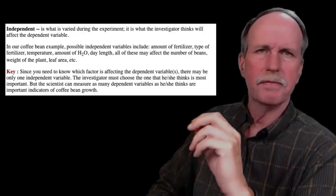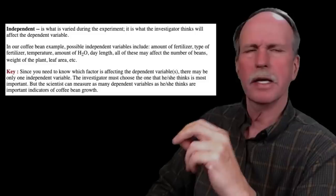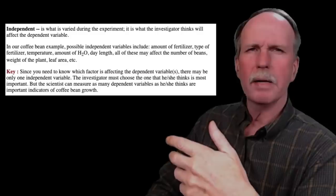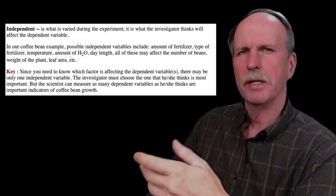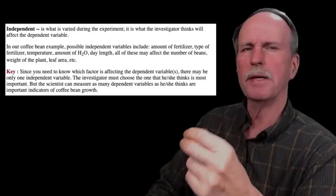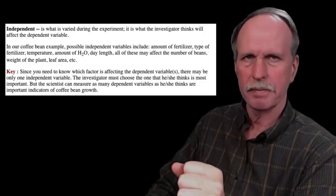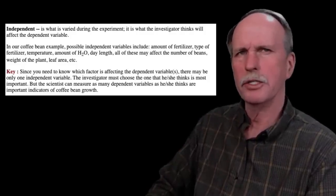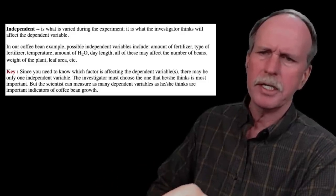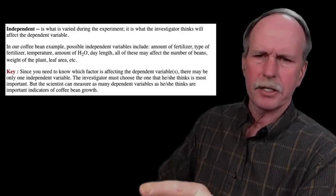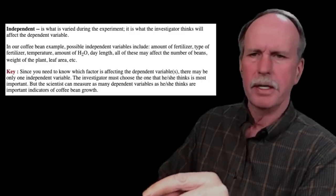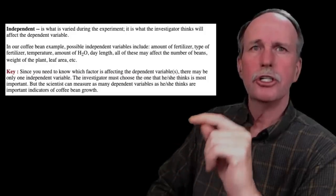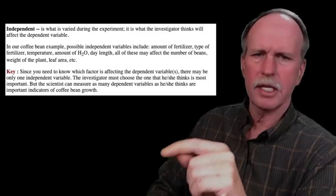The independent variable is what is varied during the experiment. It's what the investigator thinks will affect the dependent variable. There's a key thing here: first of all, there's no requirement for a particular person to manipulate this variable — it just has to change. It has to change independently of any of the other variables in the experiment, and it has to be something that will elicit a change on the dependent variable, which is what we measure. Since you need to know what factor is affecting the dependent variable, there must be only one independent variable. The investigator must choose the one that he or she thinks is most important.